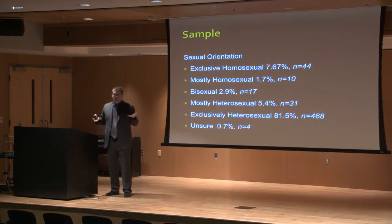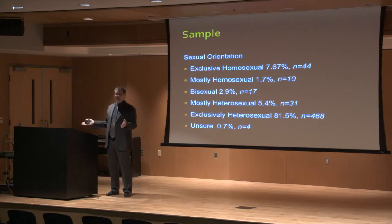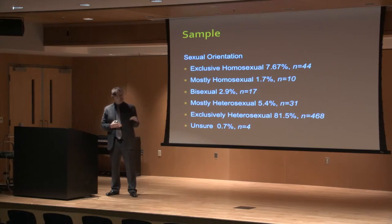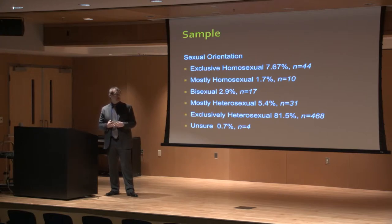Sexual orientation was measured using an adapted Kinsey scale, which measures sexual orientation from one being exclusively heterosexual to seven being exclusively homosexual. We condensed the scale further, ranging from one to five. We found that 7.6% of the sample, or 44 individuals, identified as exclusively homosexual; 1.7%, or 10 individuals, as mostly homosexual; 2.9%, or 17 individuals, as bisexual; 5.4%, or 31 individuals, as mostly heterosexual; and 81.5%, or 468 individuals, were exclusively heterosexual.